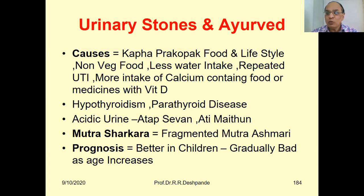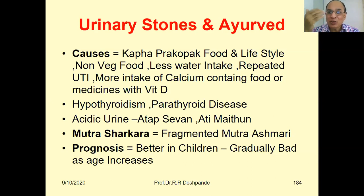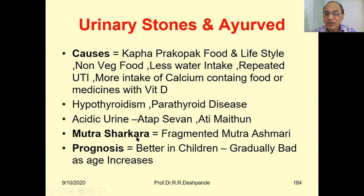Ayurveda also mentions excessive sexual activity and mutra shakara (fragmented urine) as contributing factors. The Ayurvedic concept is that a specific seasonal and individually prescribed limit should be observed.